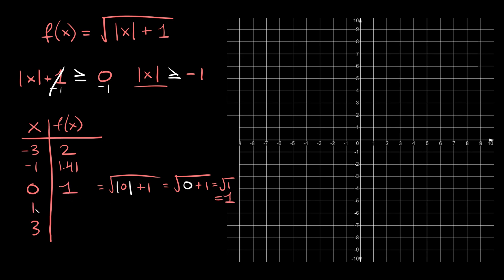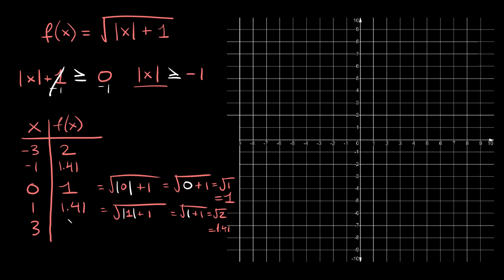Now let's plug in positive 1. Since we kept our x values symmetrical, the output is going to be symmetrical as well. Because we had negative 1 give us 1.41, plugging in positive 1 will also give 1.41. To verify: the square root of the absolute value of positive 1 plus 1 equals the square root of 1 plus 1, which is the square root of 2, approximately 1.41. And similarly, plugging in 3 gives the same result as negative 3, so f(3) equals 2.